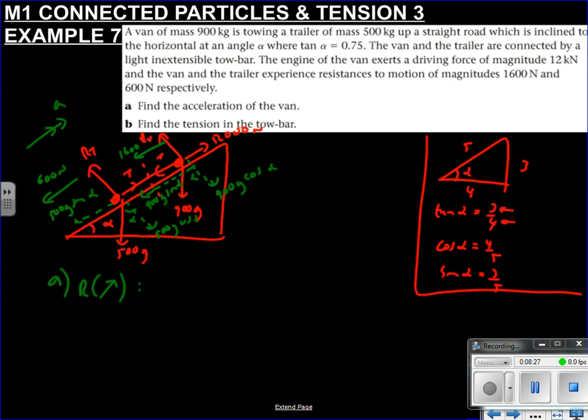So I find the acceleration of the van. We're looking at it as one system, aren't we? So what's the force going up? 12,000, isn't it? Minus all the forces which are going parallel to the slope but downwards in direction. So I've got my resistances, 1600 and the 600. And I've got my weights, which is our 500g sine alpha. But we know sine alpha is 3 by 5. We've also got our minus 900g sine alpha. But as we know, sine alpha is 3 by 5. And this all equals the total mass in motion. So 900 plus 500, 1400 times our acceleration.